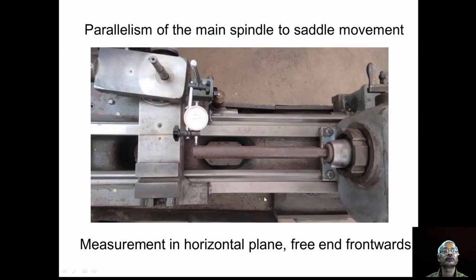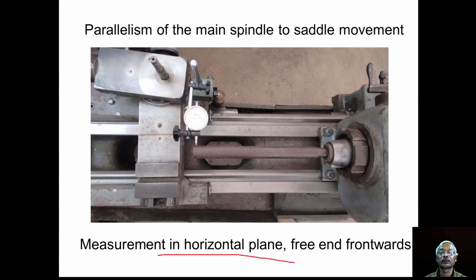For the parallelism test in the horizontal plane, the dial indicator plunger is in contact with the mandrel in the horizontal plane. The reading is set to 0 near the spindle nose and then the saddle is slowly moved. At the other end, the dial indicator reading is recorded. The difference gives the amount of parallelism error.